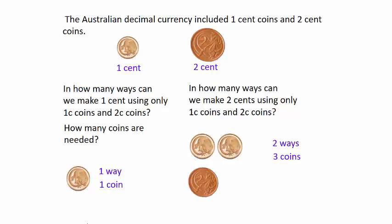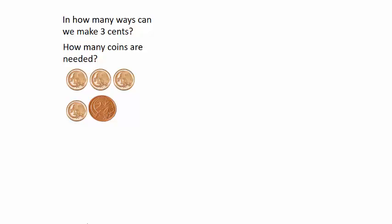Let's try the same thing to obtain a total of 3 cents and also how many coins will be needed. There's one way using three 1 cent coins, using a 1 cent followed by a 2 cent, using a 2 cent followed by a 1 cent. Notice that the order is important if we're using different coins, so there are three ways all together and a total of seven coins used.